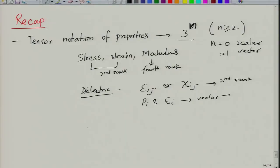A fourth rank tensor can be very tricky because you have 81 components, but thermodynamics and crystal symmetry arguments allow us to reduce this number from 81 to 21 or even lower. We then started our discussion on piezoelectric properties. We were not able to get into equations, but we just defined what a piezoelectric is. We will continue on those aspects based on crystal symmetry first, before we look at piezoelectric properties in mathematical form.